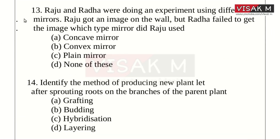Thirteenth question: Raju and Radha were doing an experiment using different mirrors. Raju got an image on the wall, but Radha failed to get an image. Which type of mirror did Raju use? The answer is Option A: Concave mirror.